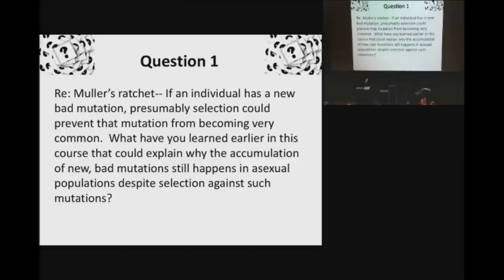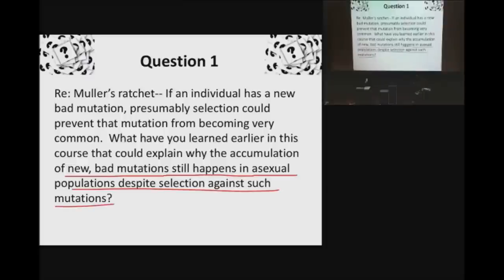Question one is dealing with Mueller's ratchet. The question is: if an individual has a new bad mutation, presumably selection could prevent that mutation from becoming very common — we've seen that in allele frequency simulations. If a bad mutation arises, unless you invoke strong genetic drift, it's just going to go away. So what explains why the accumulation of new bad mutations still happens in asexual populations, despite selection against such mutations?